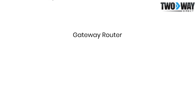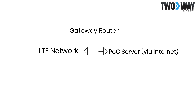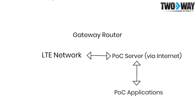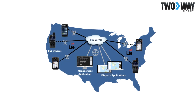Gateway routers provide connectivity between the LTE network and the POC server. Any application utilized on these devices operates on the POC cloud server, which is through the internet. These POC services are hosted in the cloud, which means that they operate on privately hosted servers that operate via the POC platform.